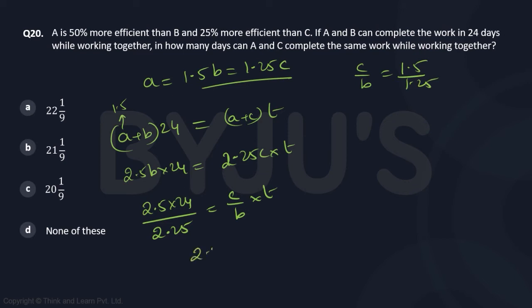So, I can write that. So, 2.5 into 24 by 2.25 is equal to 1.5 by 1.25 into t.